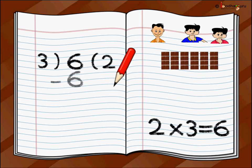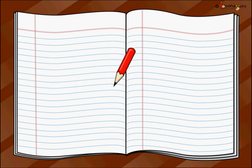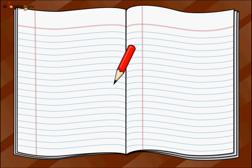So we subtract six from the number we were dividing. Six minus six is equal to zero. We can write six divided by three is equal to two in this way. Six minus six is equal to zero.